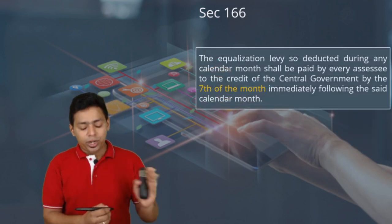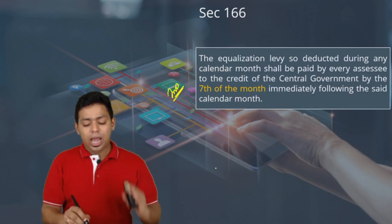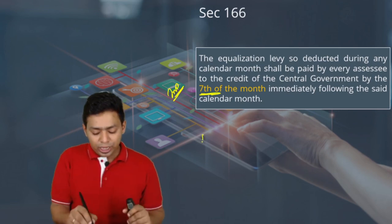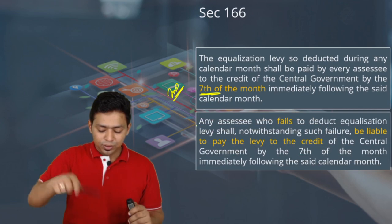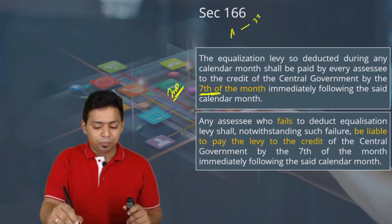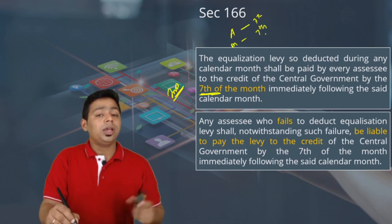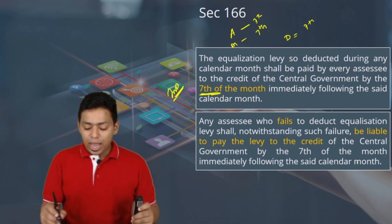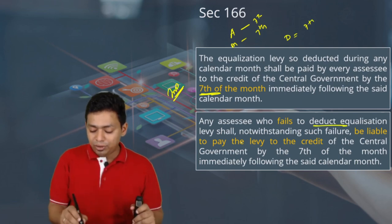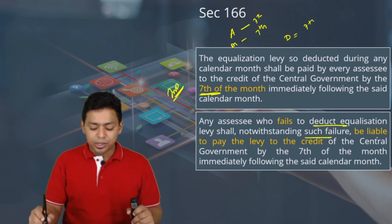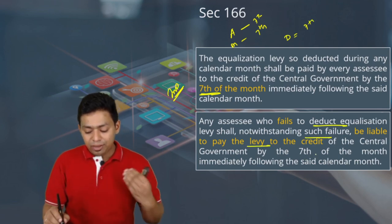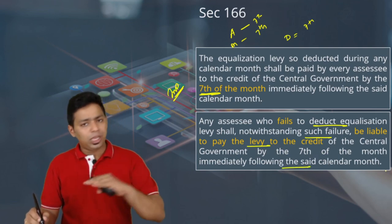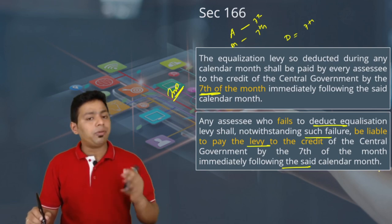Very importantly, the equalization levy so deducted has to be deposited or credited with the central government within the 7th of the following month. For April, you deposit by 7th May; for May, by 7th June; for December, by 7th January. An assessee who fails to deduct equalization levy shall nonetheless be liable to pay the levy to the credit of the central government by the 7th of the month immediately following.